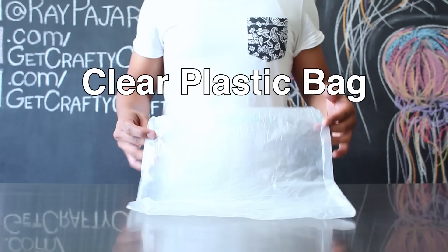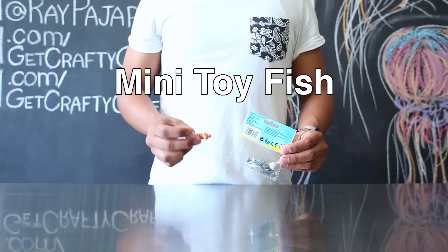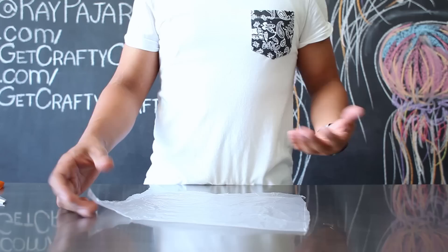The items that you'll need for today's project include scissors, blue food coloring, some string or thread, a small clear plastic bag, sharpie markers, as an optional item some mini toy fish, water, and a clear plastic bottle.